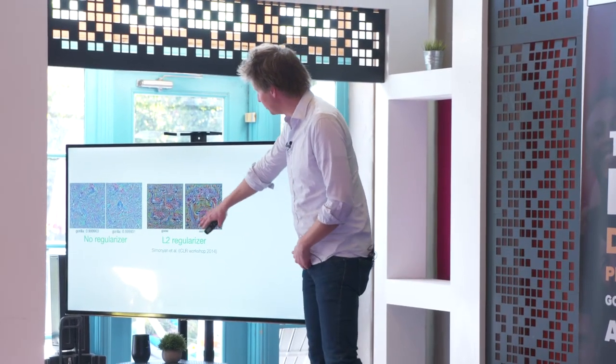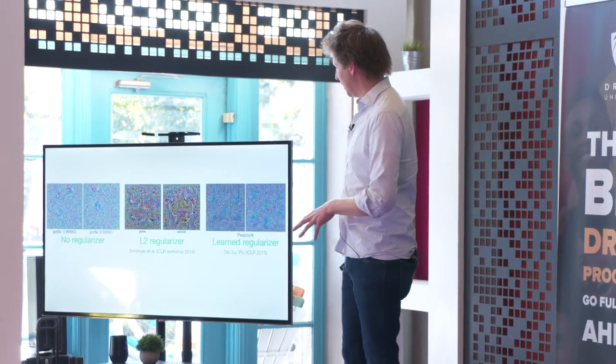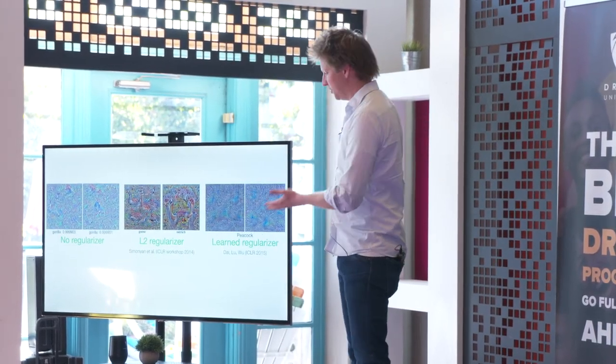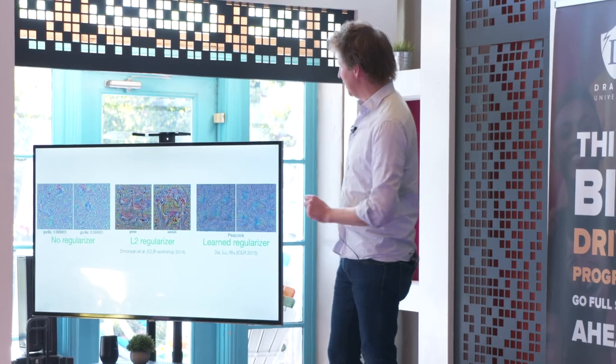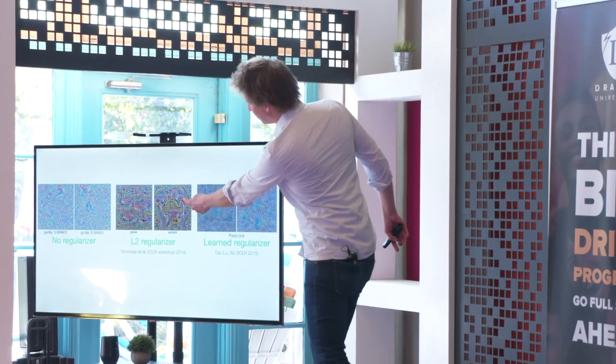So this is using L2 regularization—this is keeping the images near the origin. This is a learned regularizer, which is a little bit more complicated. In both of these cases, you can kind of see a little bit of birds emerging or peacocks emerging.